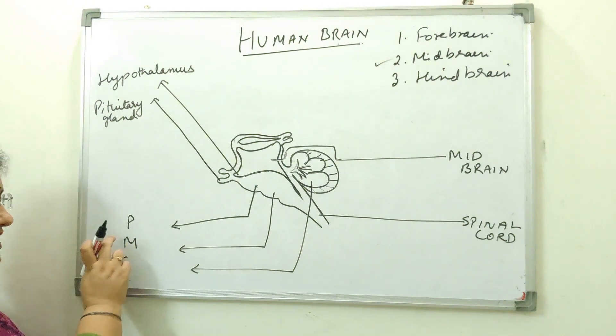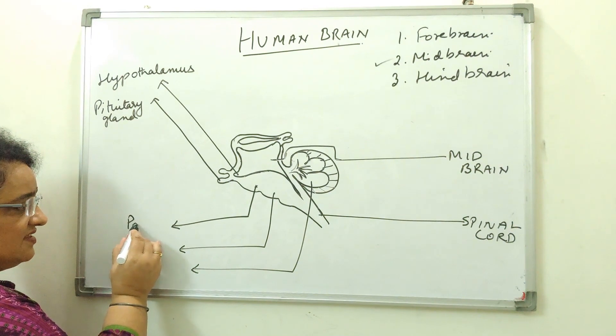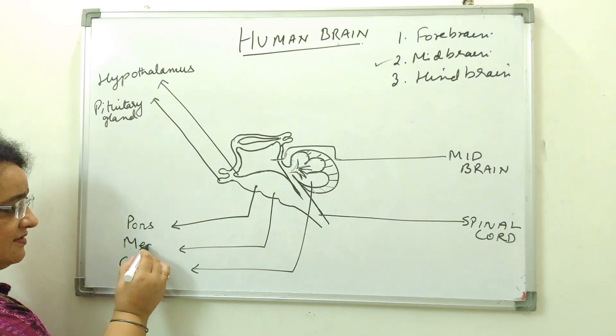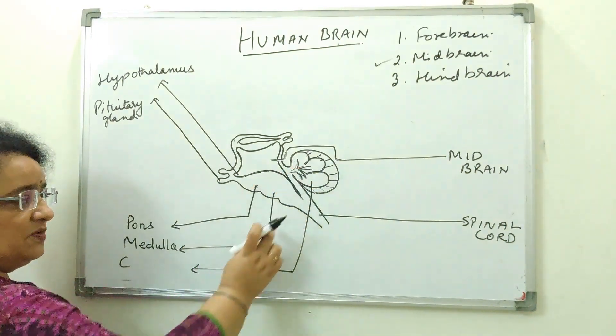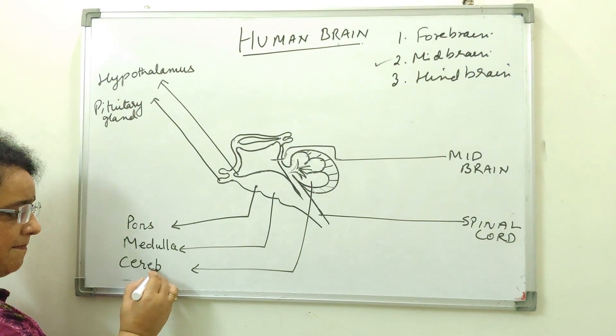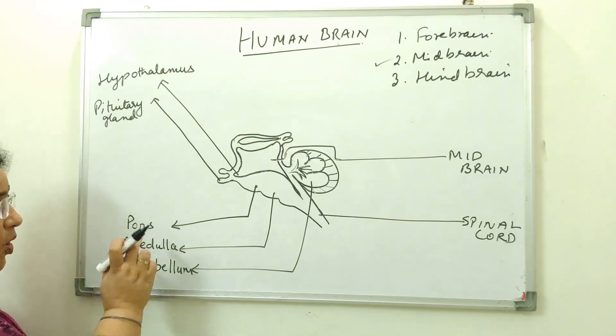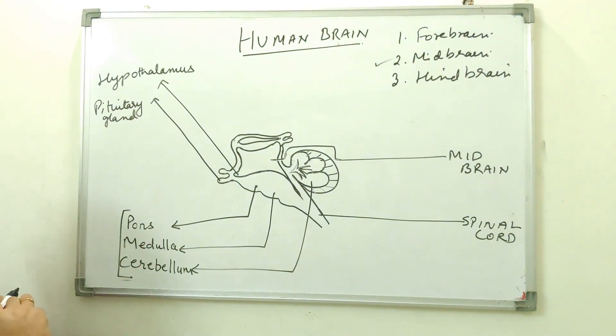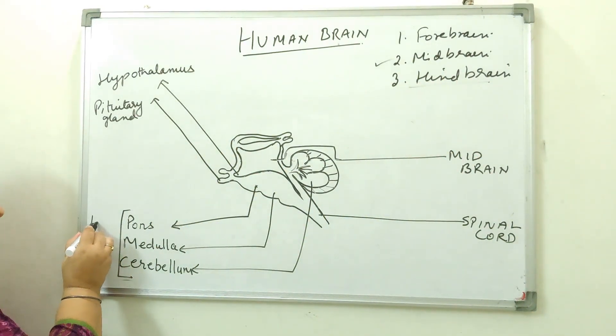What is this P, M, C? I am writing the first letters of all these three parts. This is pons, this is medulla, and this triode structure is cerebellum. And all these three parts together constitute the hindbrain.